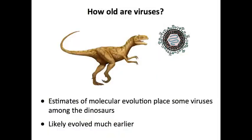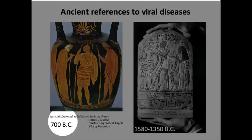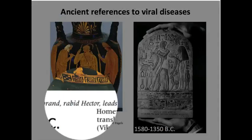But they probably evolved much earlier. We now can use sequence analysis — we're sequencing many, many viral genomes, and we can go further back. We're going to have a lecture on evolution where we talk about the specific mechanisms that led to the evolution of these viruses. Throughout written history, we can find what we think are references to viruses. For example, this 700 B.C. piece of pottery makes a reference to rabid Hector — rabies virus.